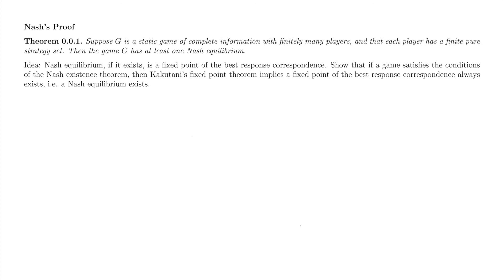The properties Nash's theorem required of a game, that it have finitely many players, and that each player have a finite pure strategy set, were enough to allow him to apply Kakutani's fixed point theorem to a game's best response correspondence. Kakutani's theorem guaranteed the correspondence would have at least one fixed point, ergo the game must have at least one Nash equilibrium.